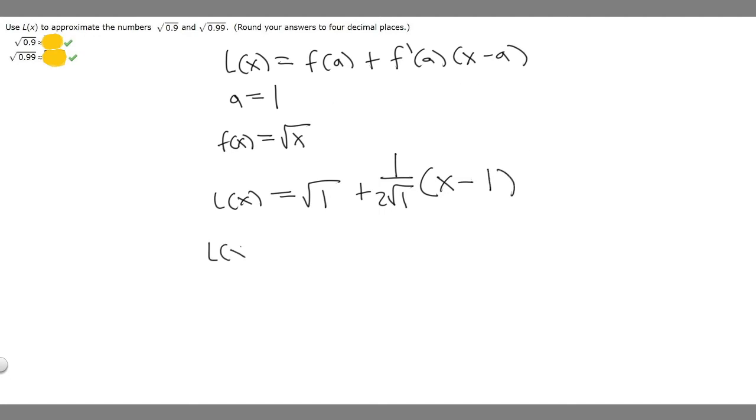Now that we've got it like this, let's solve it. The square root of 1 is just 1, plus 1/(2√1) is just 1/2 because √1 is 1. So it's 1/2 times (x - 1), which is ½x minus ½.